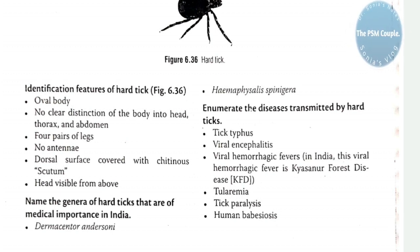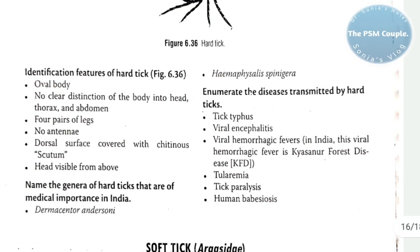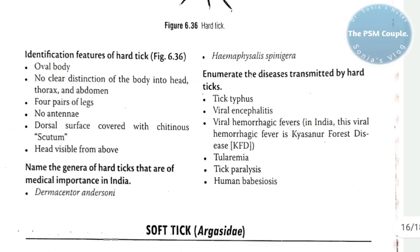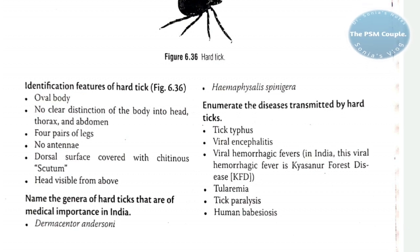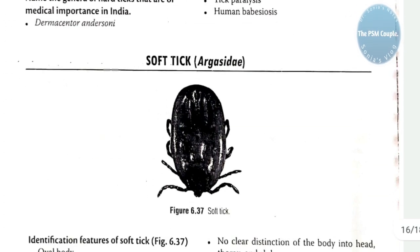Genera of hard ticks of medical importance are Dermacentor andersoni and Haemaphysalis spinigera. Diseases transmitted by the hard tick include tick typhus, viral hemorrhagic fevers, KFD (Kyasanur Forest Disease), tularemia, tick paralysis, and human babesiosis. The key features of the hard tick are: oval body not divided into head-thorax-abdomen, four pairs of legs, no antennae, and a chitinous scutum on the dorsal surface.